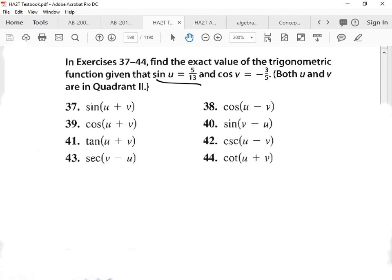Look at this guy. We got sine u and we got cosine v. That means we have two different triangles that we're getting, that we're pulling ratios from. So before I attempt any of these, I need to know my triangles.